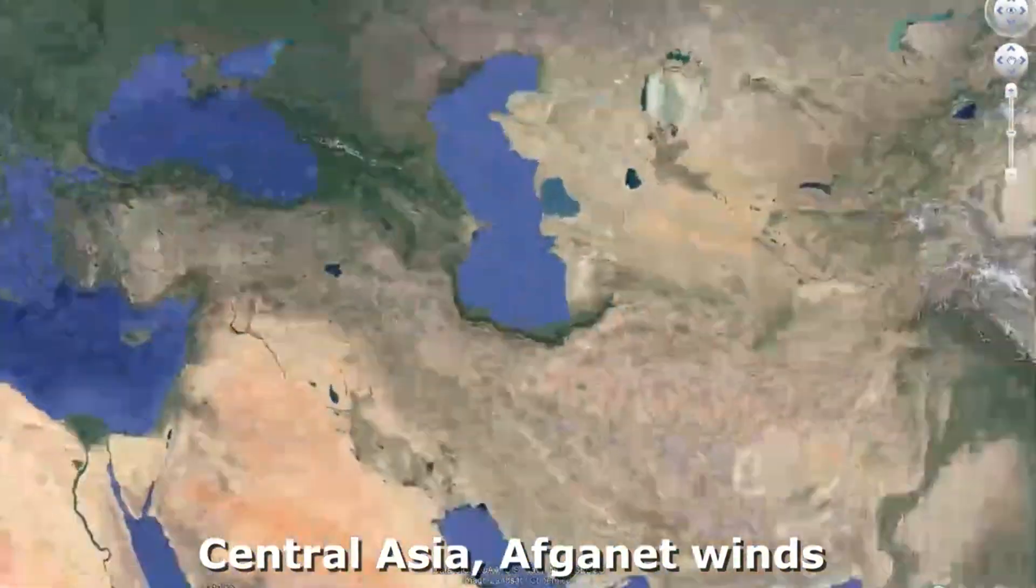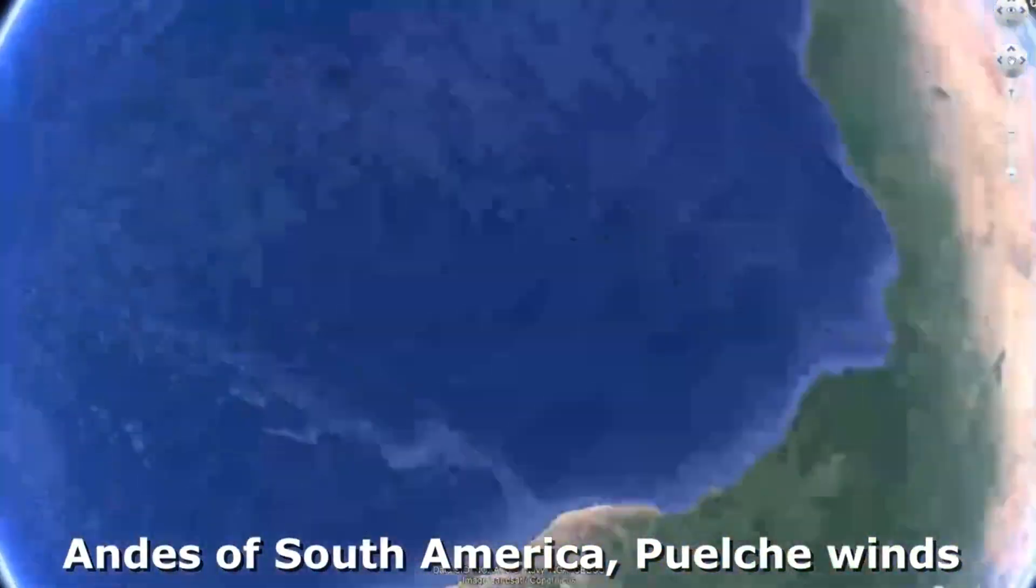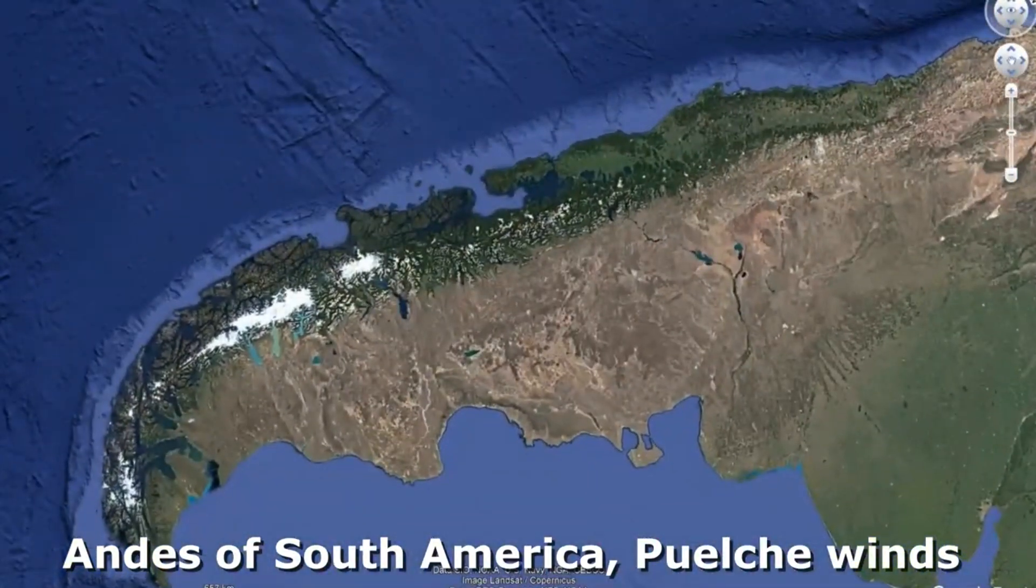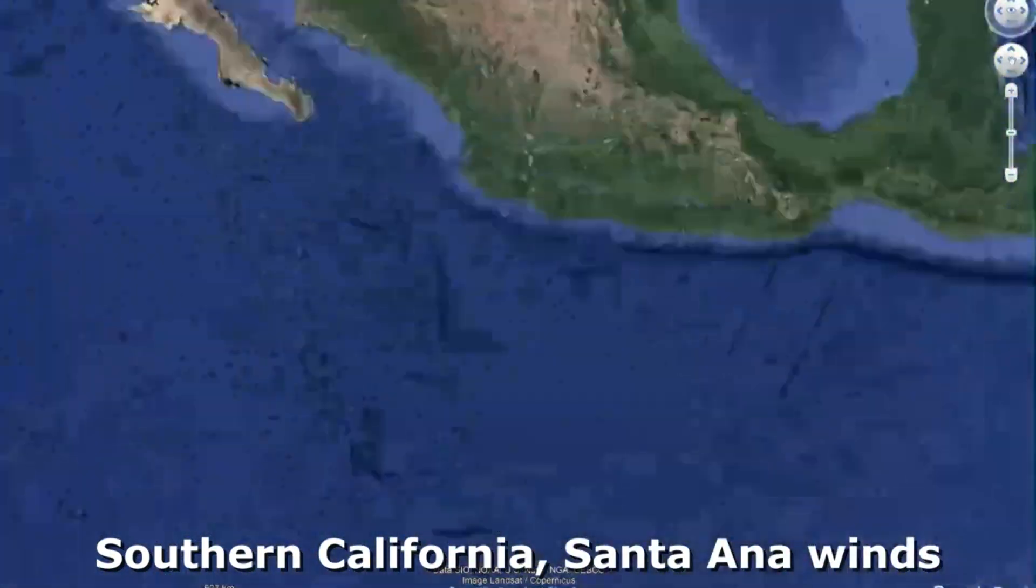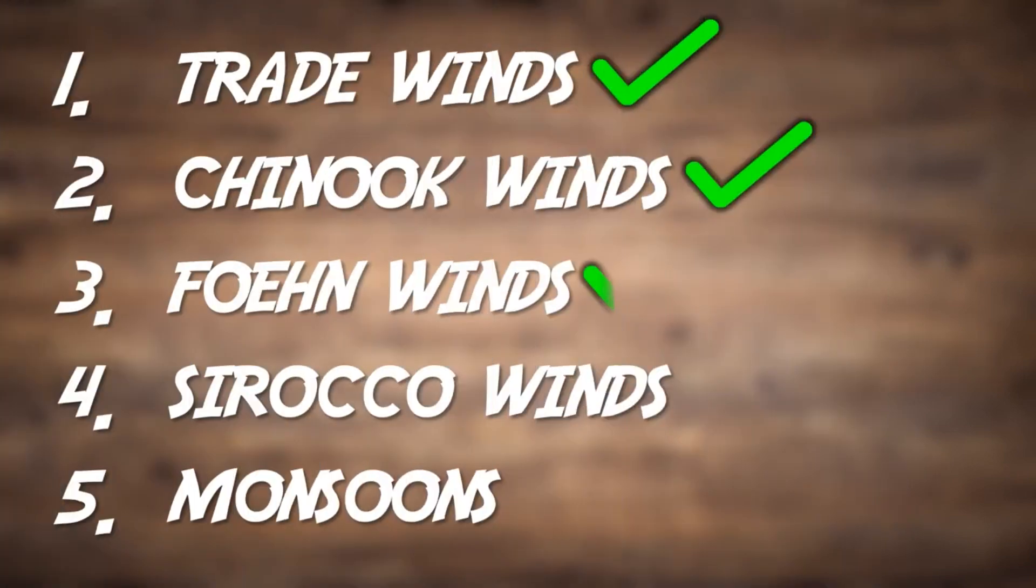If you're in Central Asia, they're called Afghanet winds. If you're in the Andes of South America, they're called Puelche winds. And if you're in Southern California, they're called Santa Ana winds. So Foehn winds are Chinook winds, but the mountains causing them are the European Alps. And that's Foehn winds.